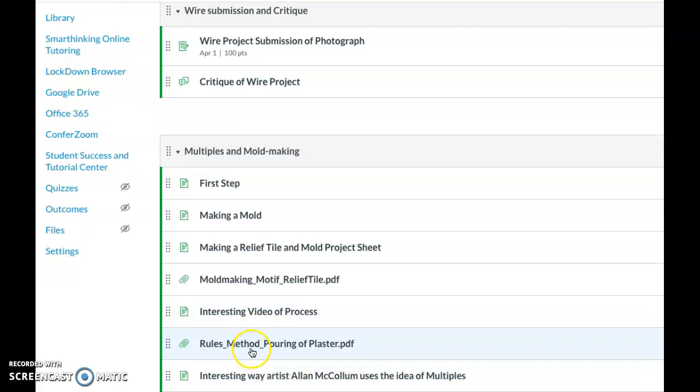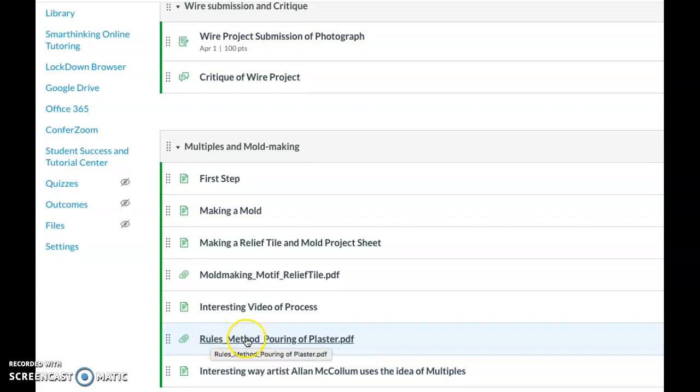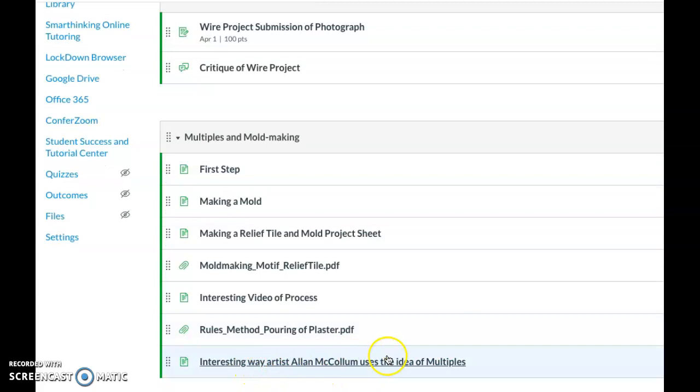Before you do any plaster work, you're going to want to look at this: rules and methods of pouring plaster so you don't mix it wrong and don't pour it down your sink and different things like that. This is a documentary I want you to watch about an interesting artist who uses multiples. I'm probably going to break this module up into the plaster section so it's easier to follow, but let's look at this slideshow here for a minute.